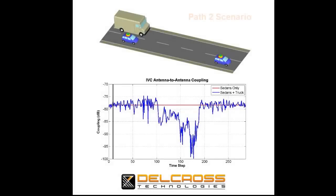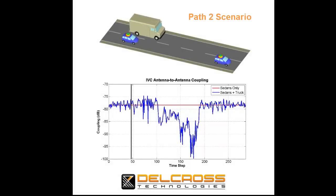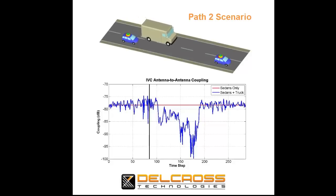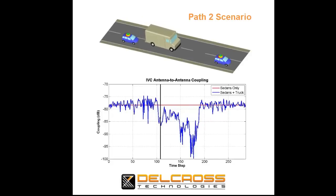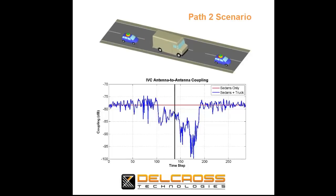Now we look at the second case, where the delivery van moves between our sedans before passing the lead sedan. In this scenario, the sedans are 23 meters apart. We see about minus 78 dB of antenna coupling without the presence of the van — that is, the red curve.